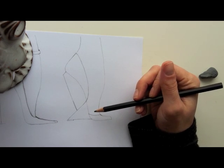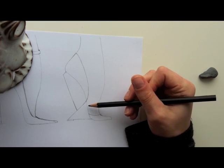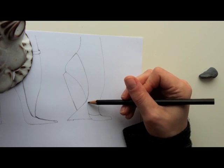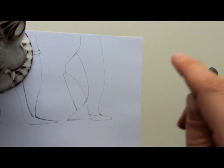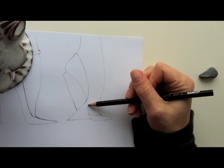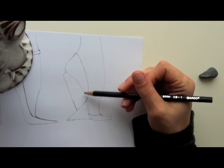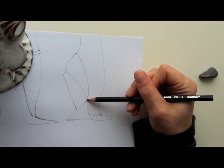there's something called an insole board that you'll be able to see. So you know like when you look at a sandal, you can see a bit of shoe here, the board that the foot is sitting on. So you want to draw that in.